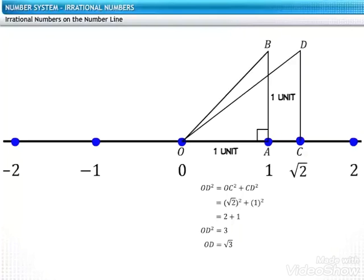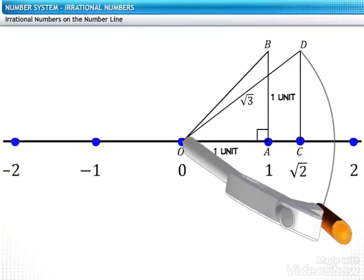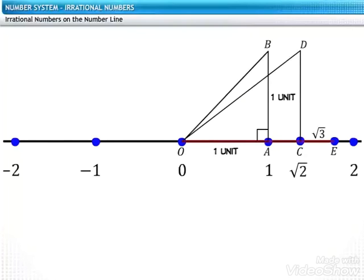With O as the center, mark the length of OD with a compass and draw an arc on the horizontal line. Wherever the arc intersects the horizontal line, mark that point as E. And the distance from O to E is the square root of 3.